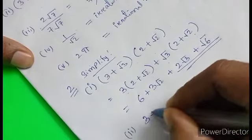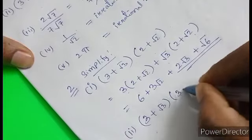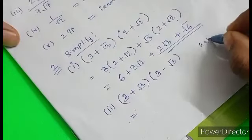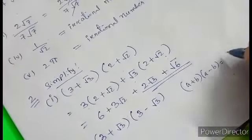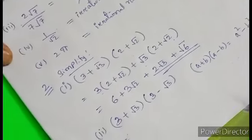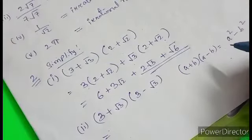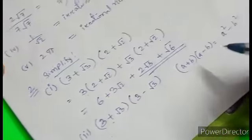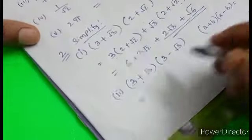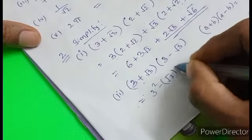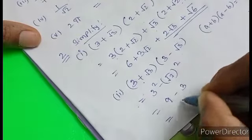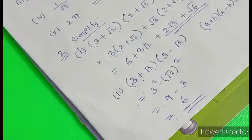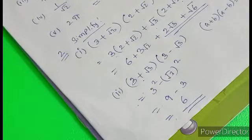Roman numeral two: (3 plus root 3)(3 minus root 3). This is in the form of (a plus b)(a minus b), which equals a squared minus b squared. Here a is 3 and b is root 3, so we get 3 squared minus root 3 squared, which is 9 minus 3 equals 6.